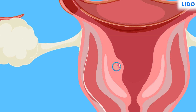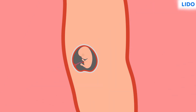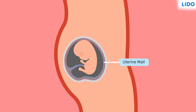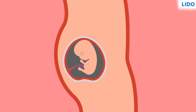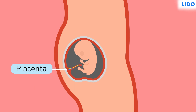Fertilization and implantation lead to conception in a female, who is then considered pregnant. A special tissue is formed as a bridge between the uterine wall and the growing embryo, which gets its nutrients from the mother's body and disposes of its wastes through this connection known as the placenta.